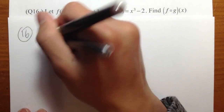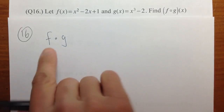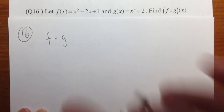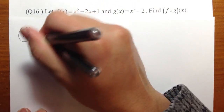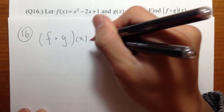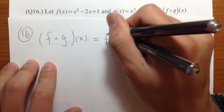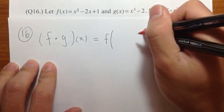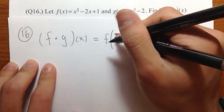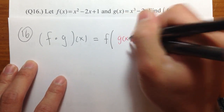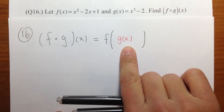16. f little circle g — this is f of g of x. This means I'm going to have the f on the outside, and then the big parentheses, and then I'm going to plug in g of x, the function g of x, inside of the function f.